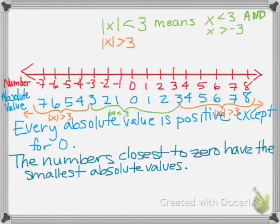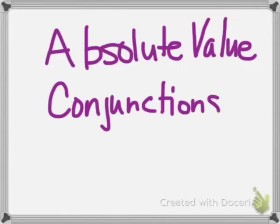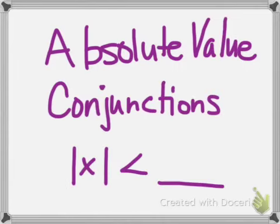If we have x's and the absolute value of x is less than 3, it means x is less than 3 and x is greater than negative 3. That is called a conjunction. With conjunctions, all values are concentrated in one particular area of the number line.